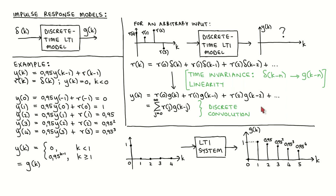In this video, we have briefly looked at time domain descriptions of discrete time signals. We have also looked at two time domain descriptions of discrete time systems, namely difference equations and the impulse response. It is difficult to work with systems and signals in the time domain, so in the next video, we will convert these time domain descriptions to the Z domain, which is more convenient for some operations and analyses.